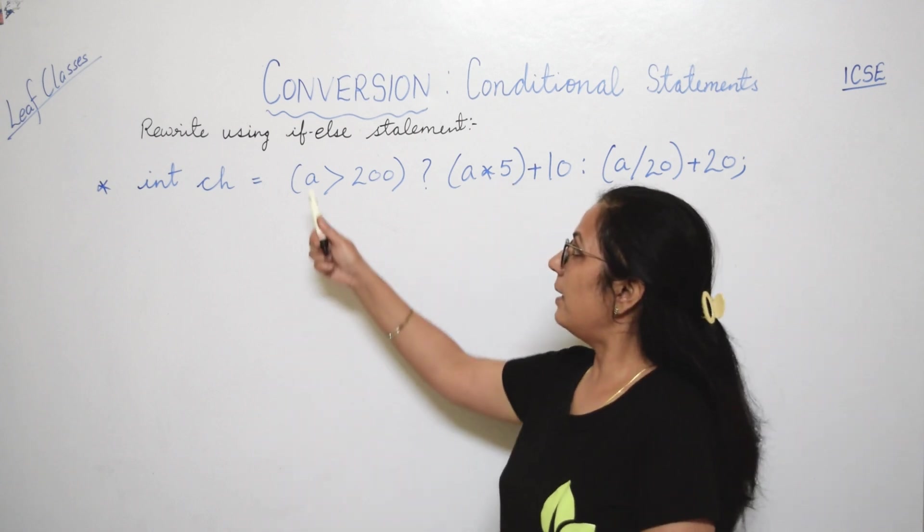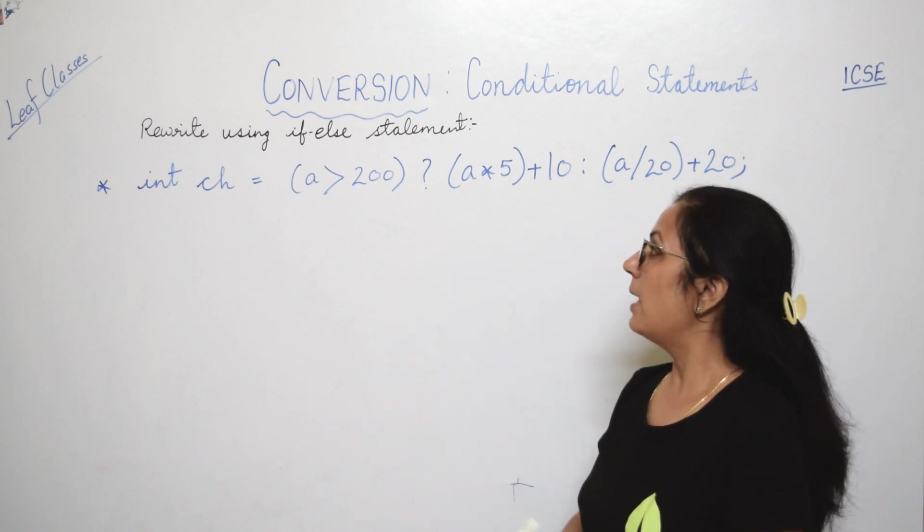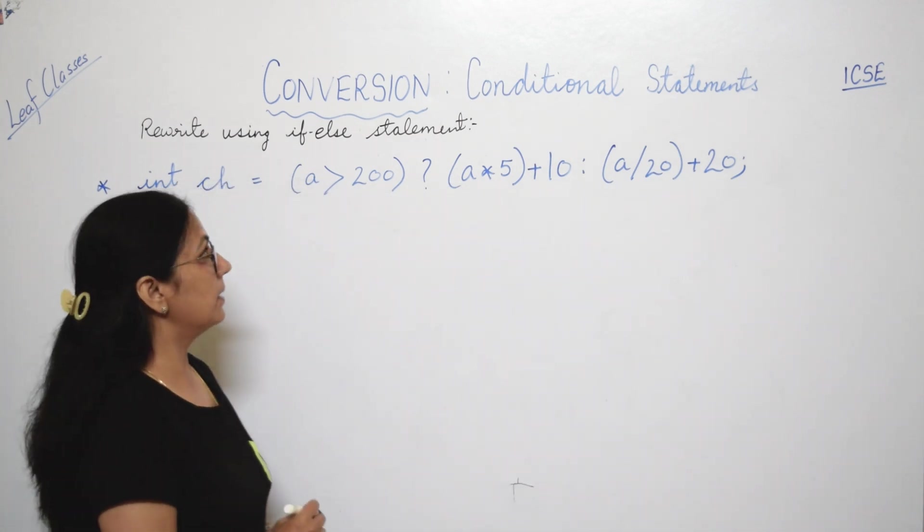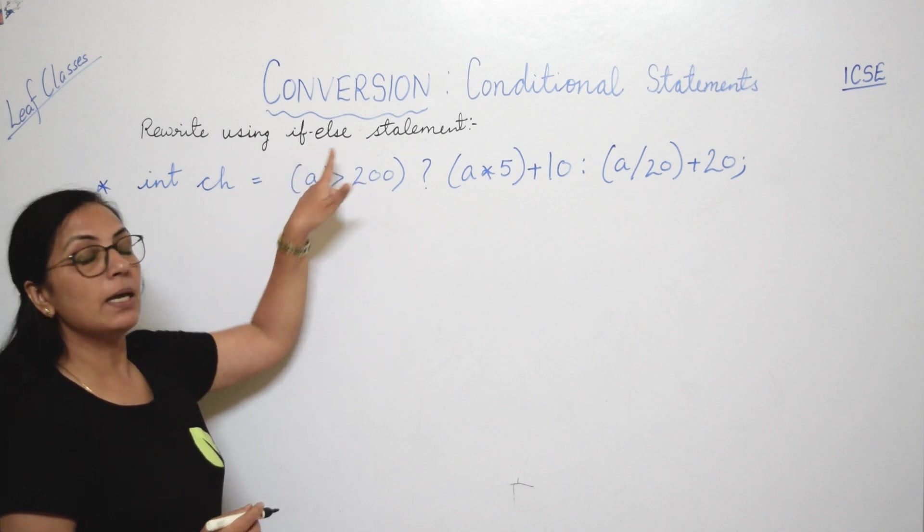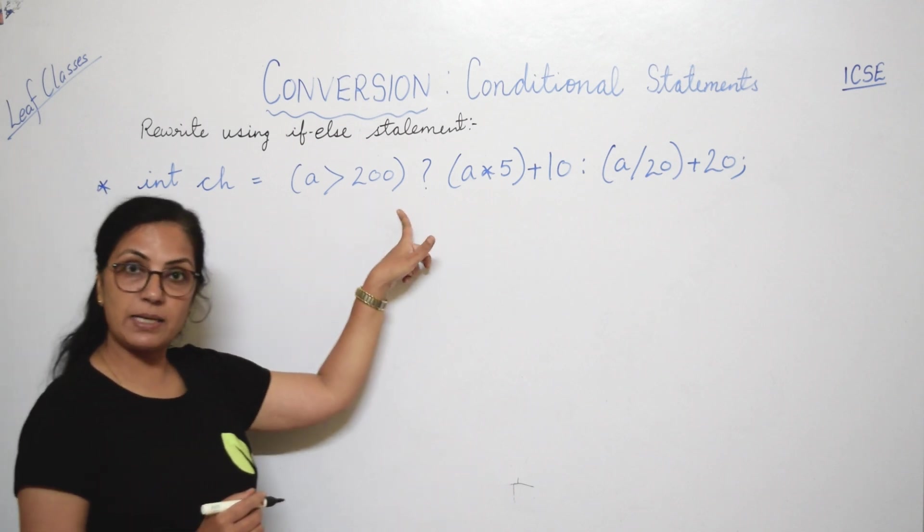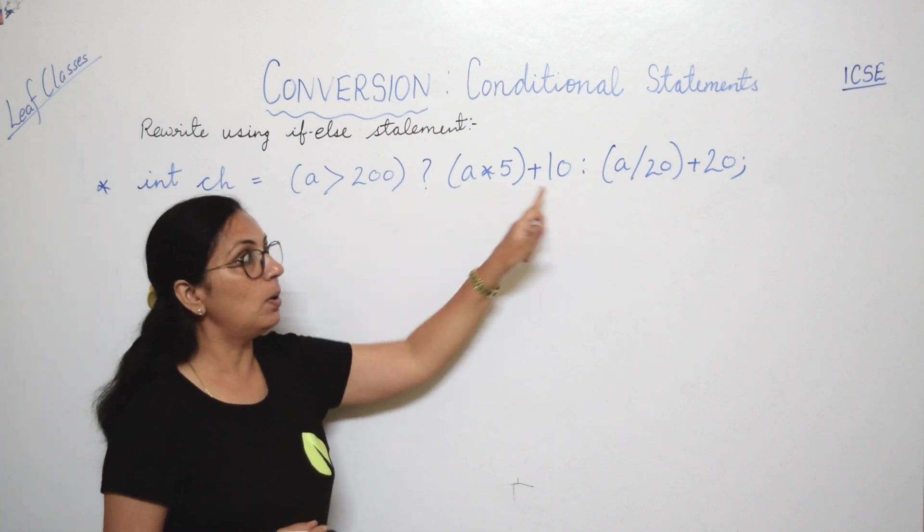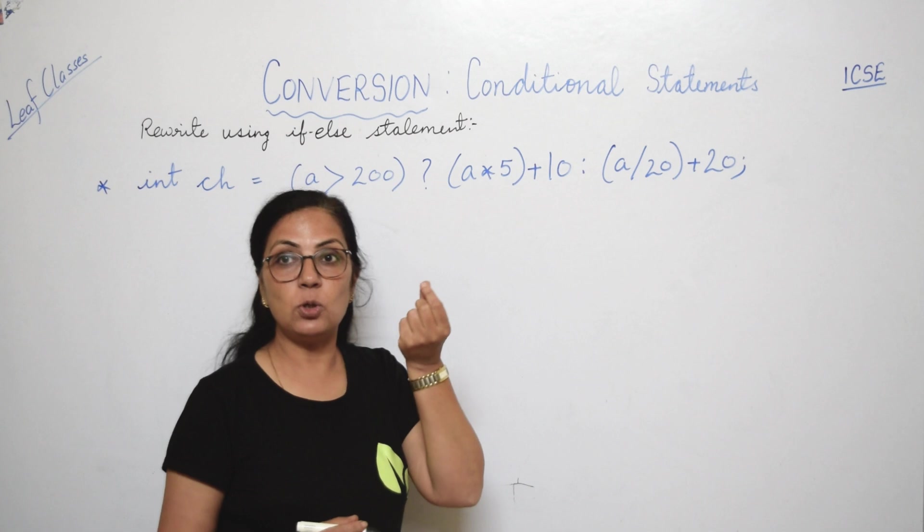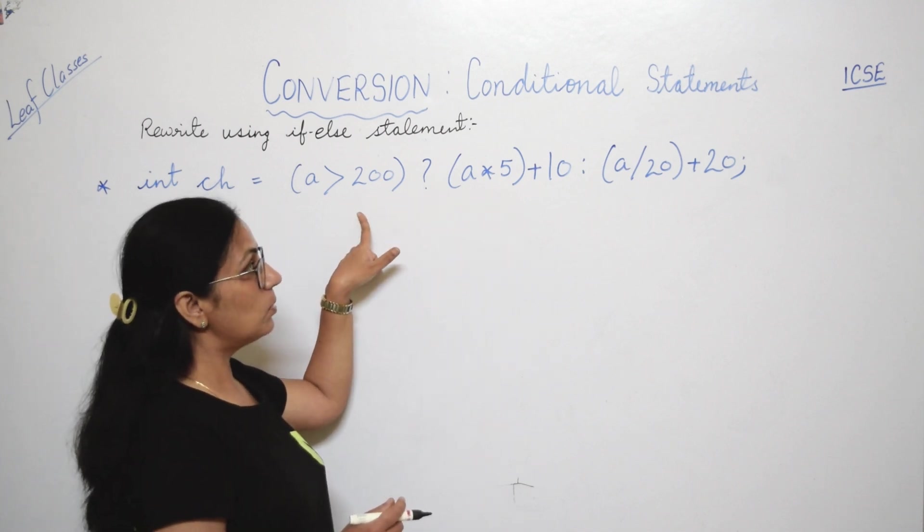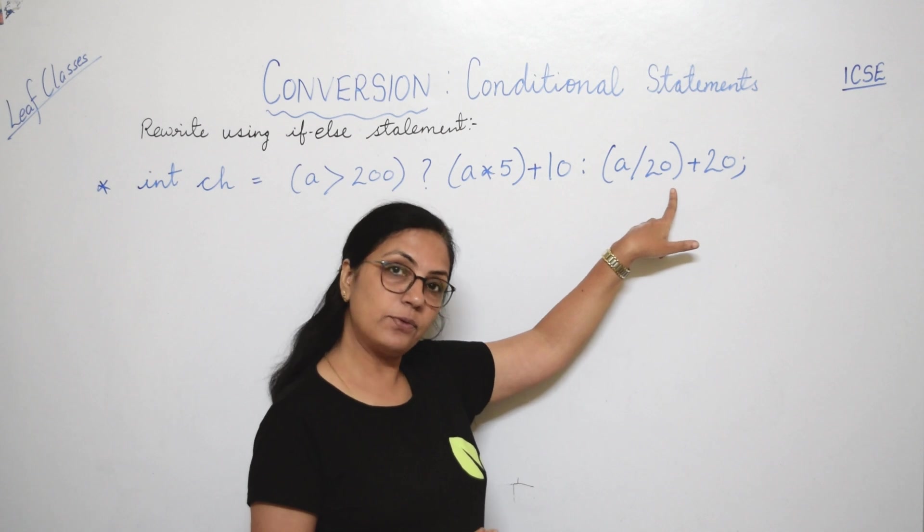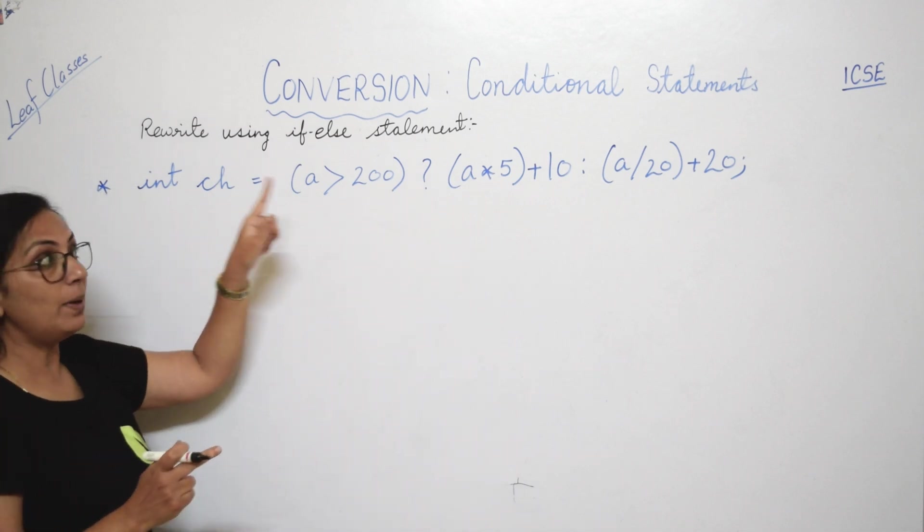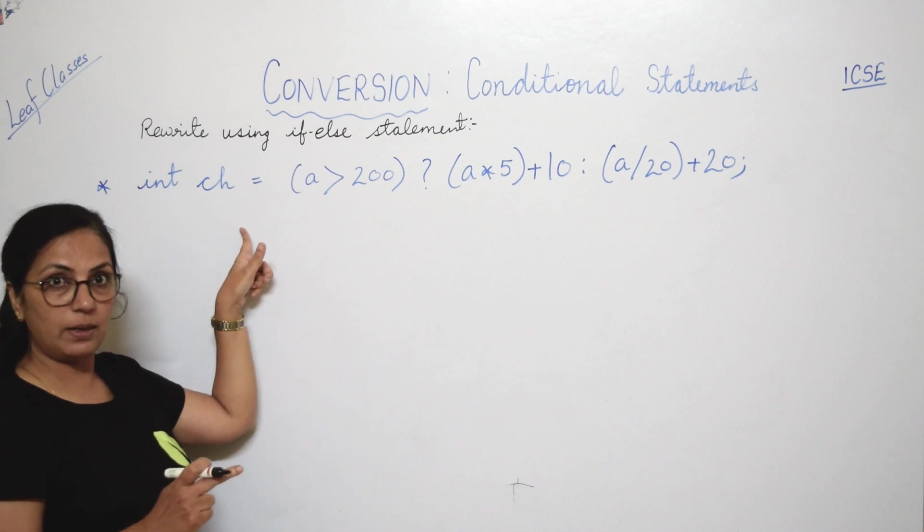So the first one: rewrite using if-else statement. Yes children, you get the questions like this. So it is written question mark colon, this is the ternary operator, right, or the conditional operator. You have to convert this statement using if-else statement. So how we have to do? See here, always before the question mark the condition is there. Question mark se pehle kya hoga? Condition hoga. And question mark aur colon ke bich mein what is there? The statement jo agar condition true hogi toh konsa statement execute hoga? That is written after question mark. And now here the expression is there, so this expression means this variable written because it will take that expression. This expression will be assigned to this variable, right children?